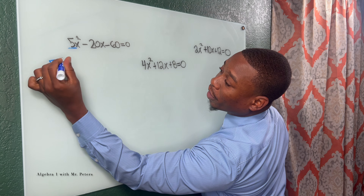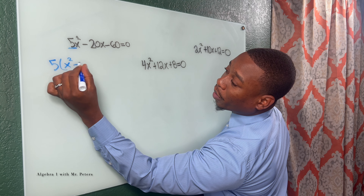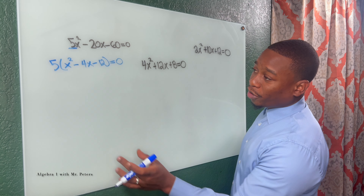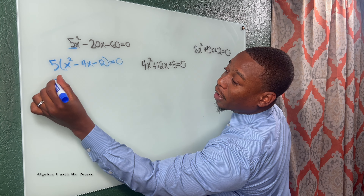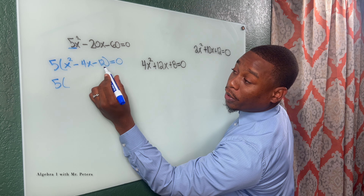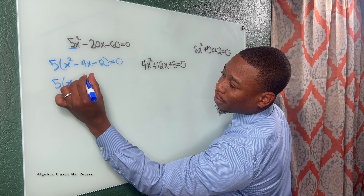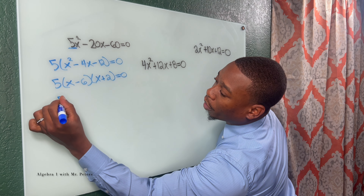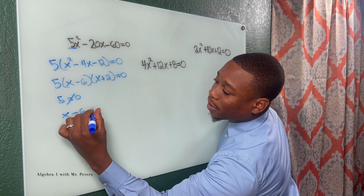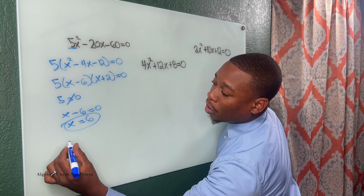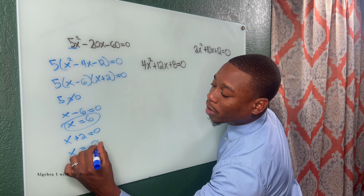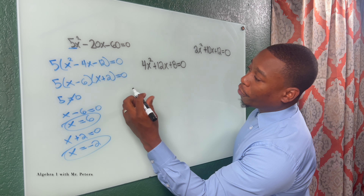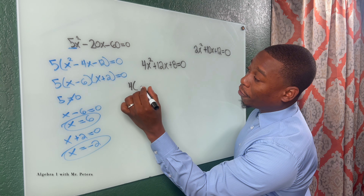Now we're talking about factoring with the greatest common factor, the GCF. We try to divide the equation by a specific number where we can divide all three terms and the lead coefficient becomes one. If we pull out five, everything gets divided by five, leaving x squared minus four x minus twelve equals zero. After pulling out the GCF, we focus on what's inside the parentheses. Multiplying to give twelve and adding to give four, we get x minus six times x plus two equals zero. So x equals positive six or x equals negative two.